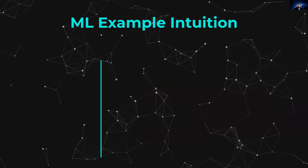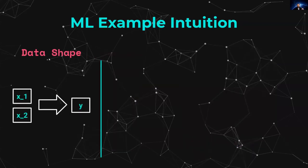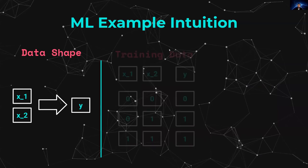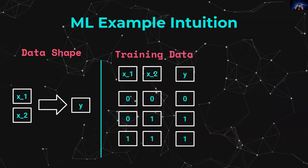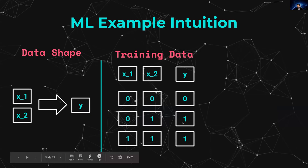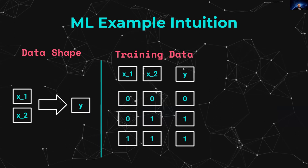In terms of intuition, input data consisting of two numbers will go through our machine learning model and produce a prediction that should match what we expect. The training data is simple: when we see zero and zero we expect zero, when we see zero and one we expect one, when we see one and one we expect one, and so on. The focus is on intuition for the Kompute interaction rather than on the machine learning itself.